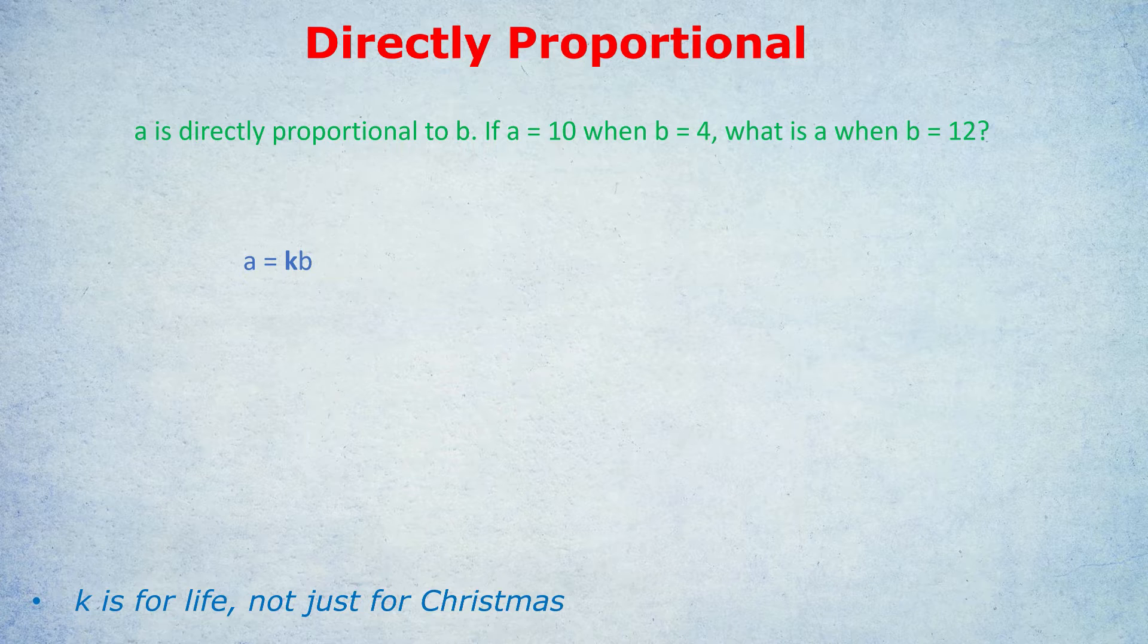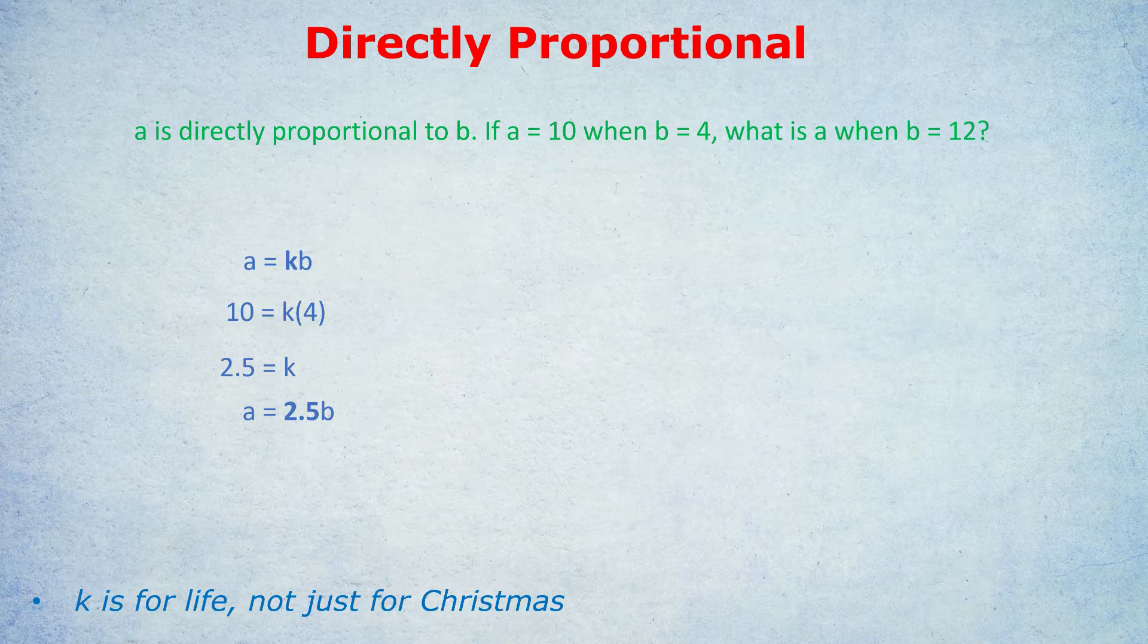Let's see how that works. If we have this equation and we know A is 10 when B is 4, we can insert those numbers in. A is 10, we replace the A with 10. B is 4. Now we could simply divide both sides by 4, because 10 equals 4K. Divided by 4, K is 2.5. And again, K is for life, not just for Christmas. Once you've worked out K, that is permanently in the equation. It is the constant in the equation. So we can rewrite the equation as A equals 2.5B.